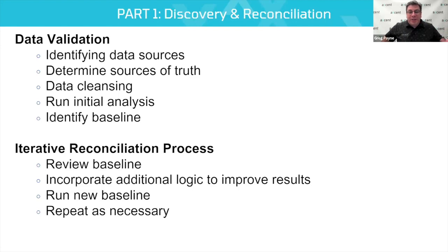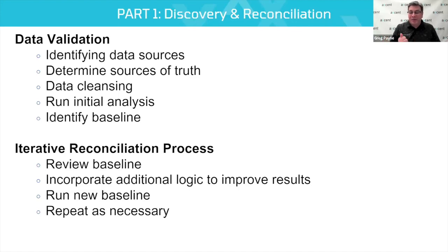The first big step is your data validation — assess your data architecture. What are your data sources? How many places are you getting data from? They may be systems, people, or emails — any number of things. You have to identify the sources of your data. Then determine what's your source of truth. When we talk about a data source of truth, it's what sources matter most for your business. Many clients have multiple sources created for different departments, with databases, trackers, or spreadsheets of various kinds.